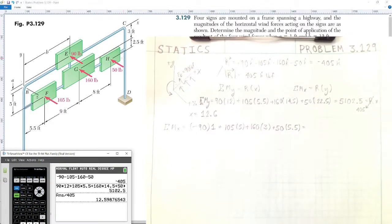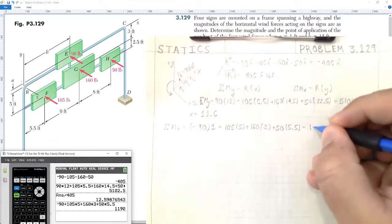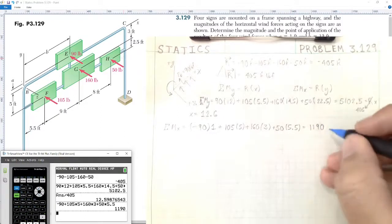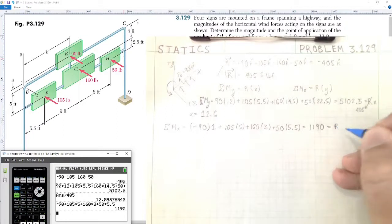And this is equal to, let's determine on the calculator. So we have negative 90 times 1, plus 105 times 5, plus 160 times 3, plus 50 multiplied by 5.5, which gives us a moment of 1190.